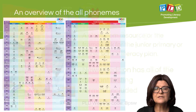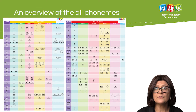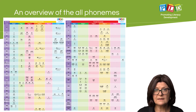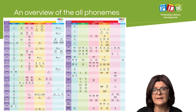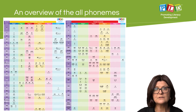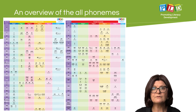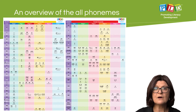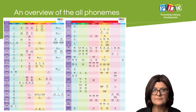The initial pages provide overviews of all of the phonemes within the English language and how they have been allocated to Stages 1, 2, 3, 4, 5, and 6, and how gradually, over time, all concepts will be taught.